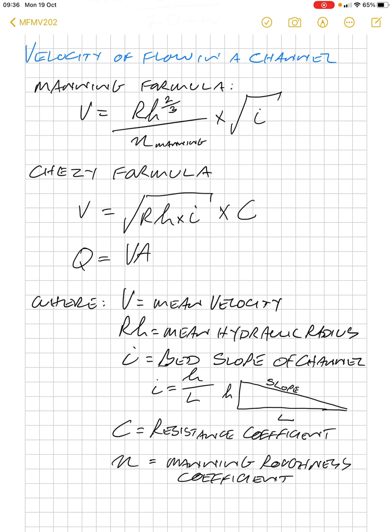And as we know, discharge Q is velocity times area. So where V is our mean velocity, Rh is the hydraulic mean hydraulic radius, i is the bed slope of the channel which we can calculate by taking the height of the drop off and dividing it by the length of the distance along the channel—so that will give us our i value. C is a resistance coefficient we use in the Chezy formula, and n is a Manning roughness coefficient used in the Manning formula.